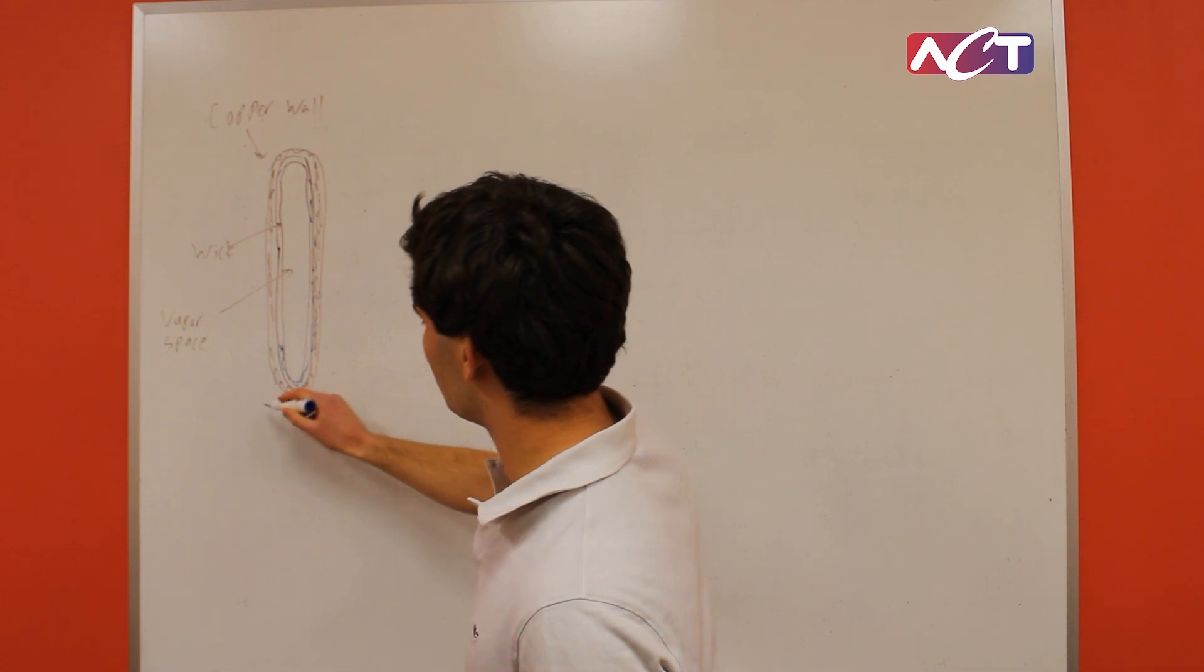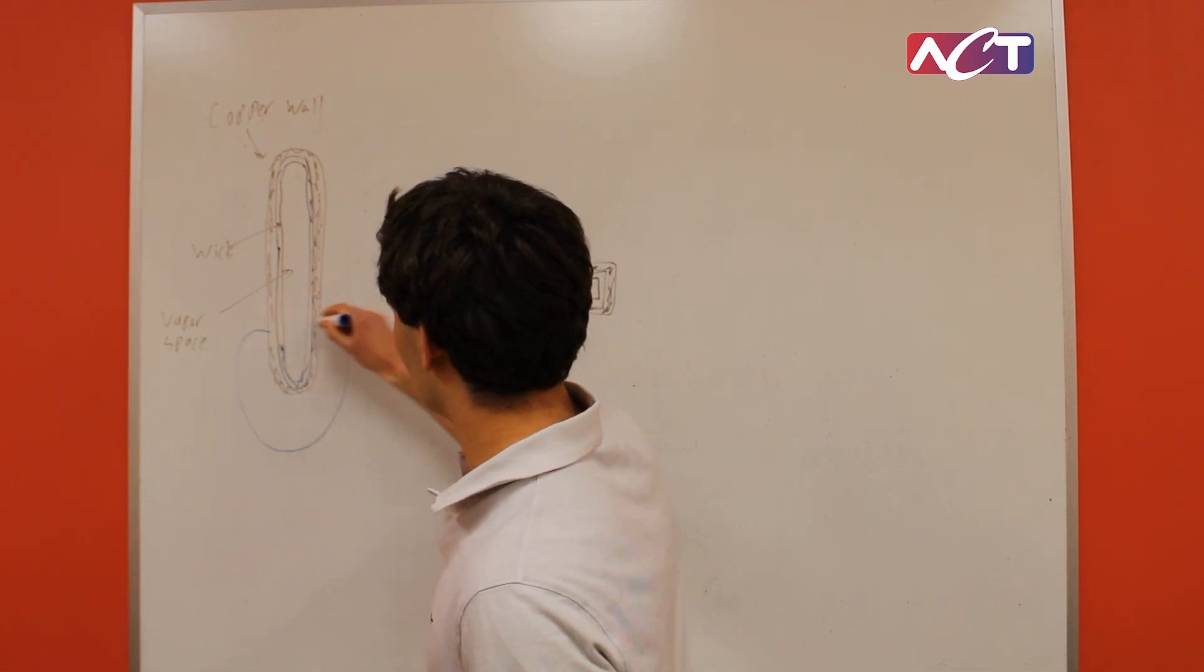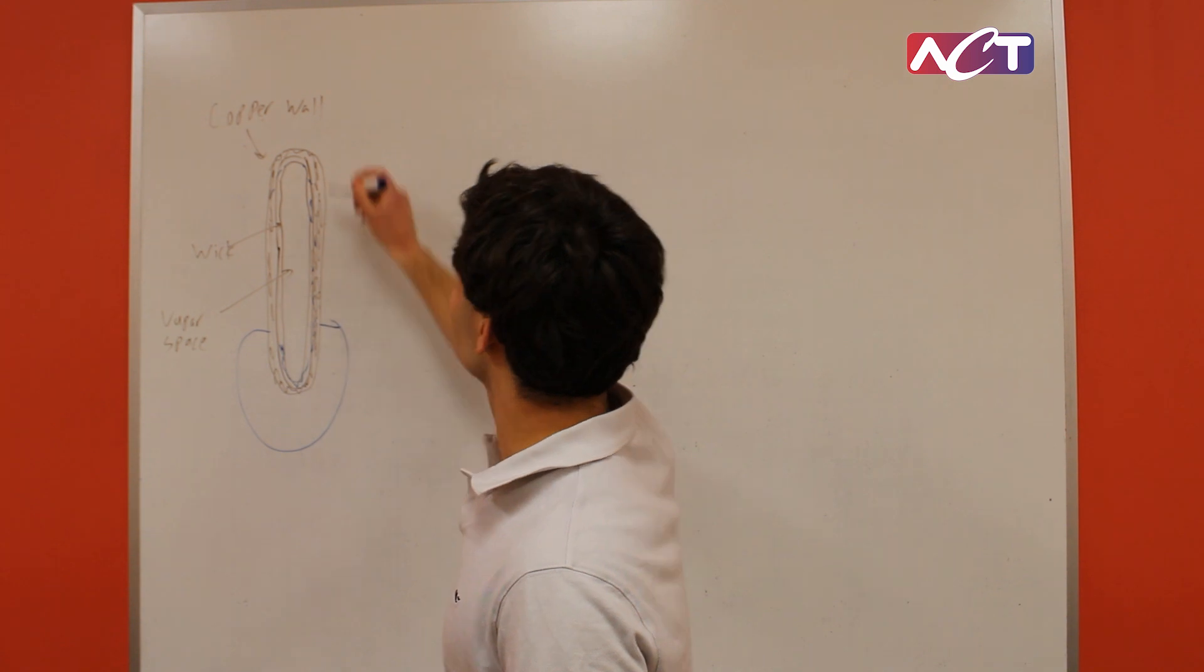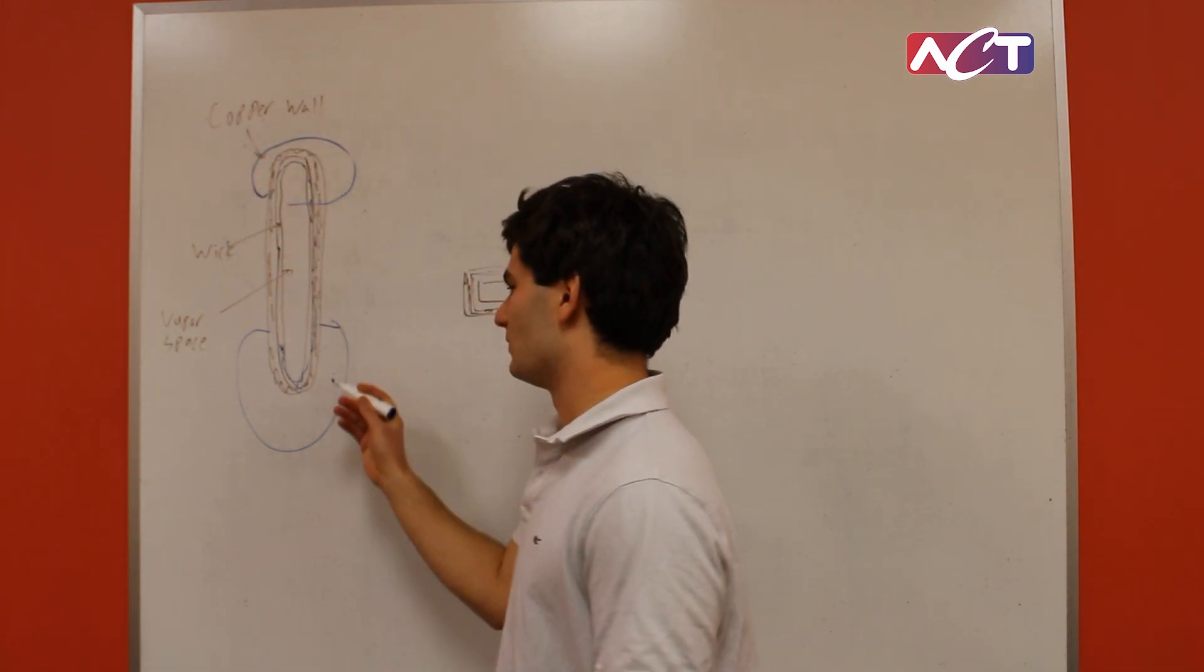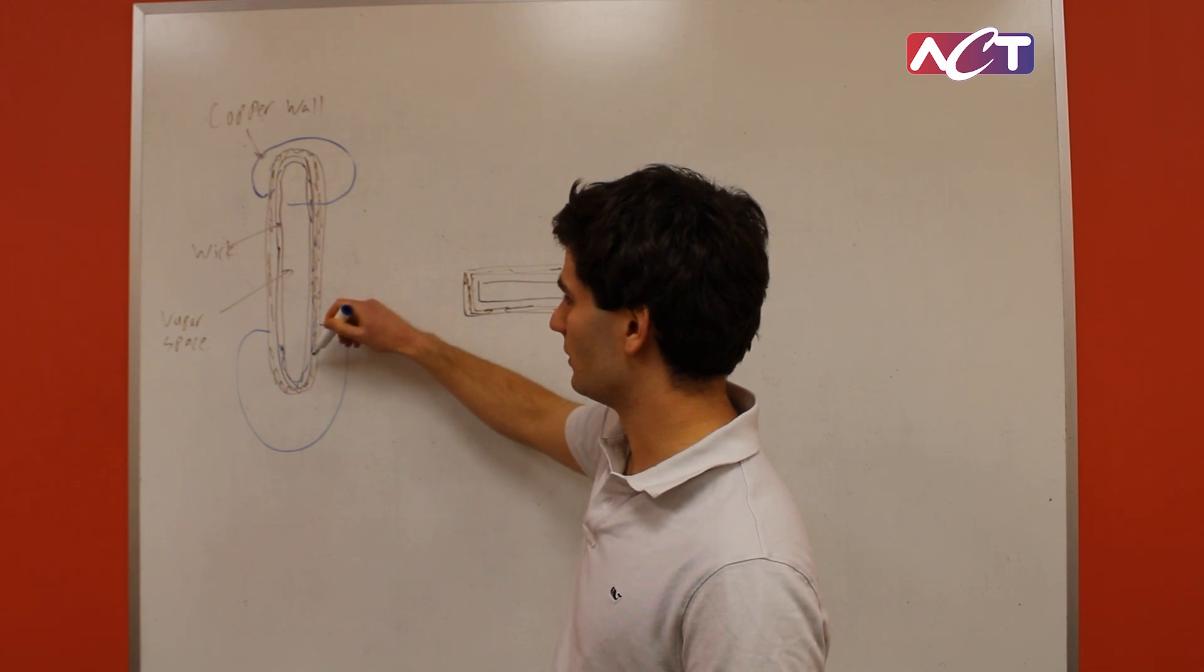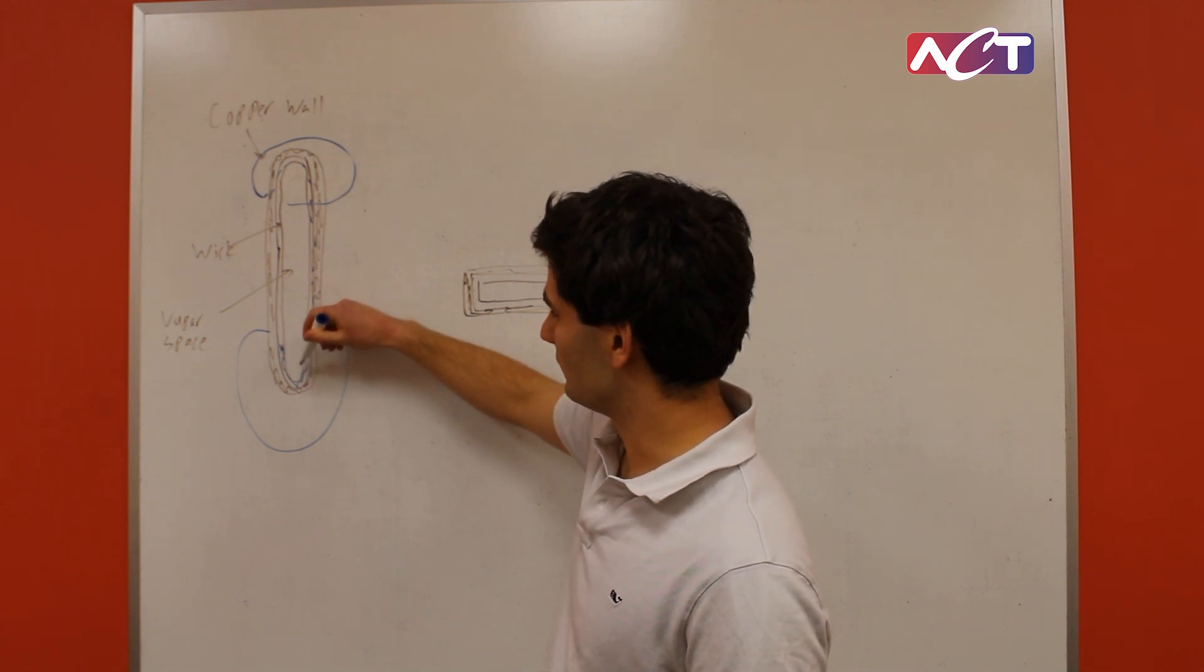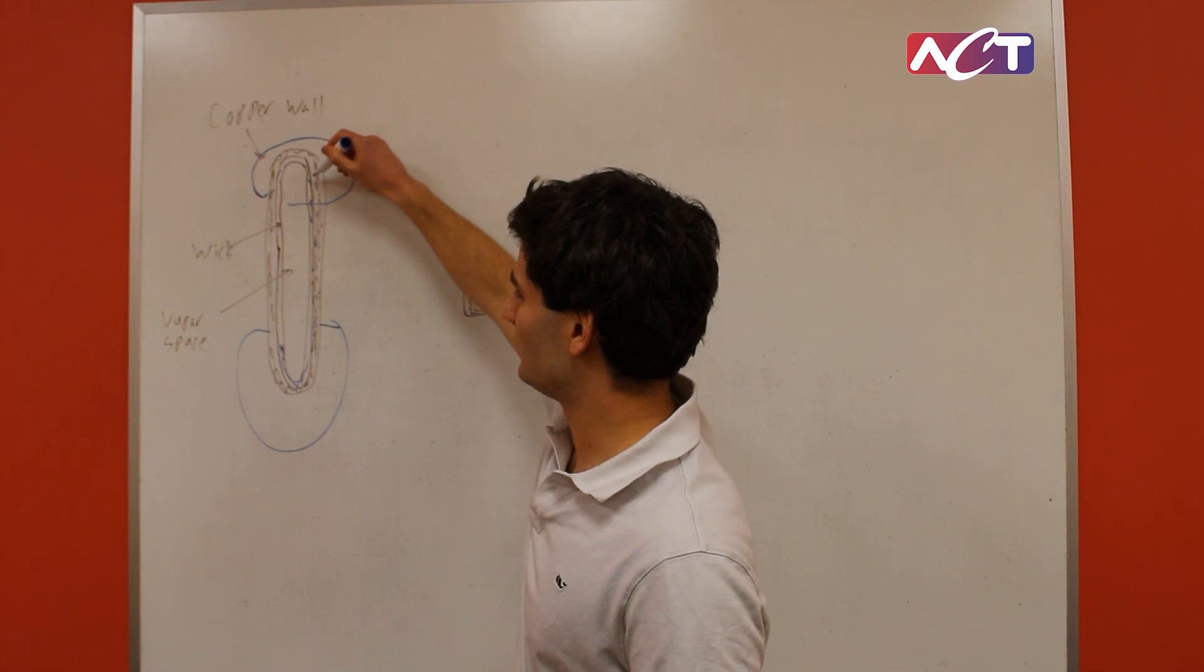So you might have some sort of heat source here, call it the evaporator, and then the heat rejection site might be up here. So what would happen is you would have the water boil into the vapor space here, and then it would condense back into the wick here.